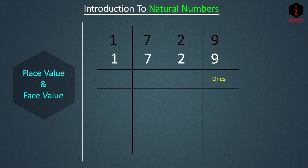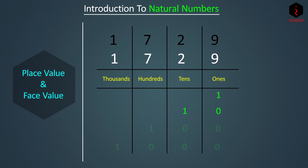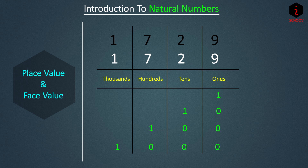Why are the places called ones, tens, hundreds, etc.? Remove the digit and place a 1 there, then put as many zeros as possible to the right. So 9 is at ones, 2 is at tens (place value = 1 followed by one zero = 10), 7 is at hundreds, and 1 is at thousands. To find the place value of a digit, multiply the digit by its place. For example, the place value of 7 is 7 × 100 = 700.